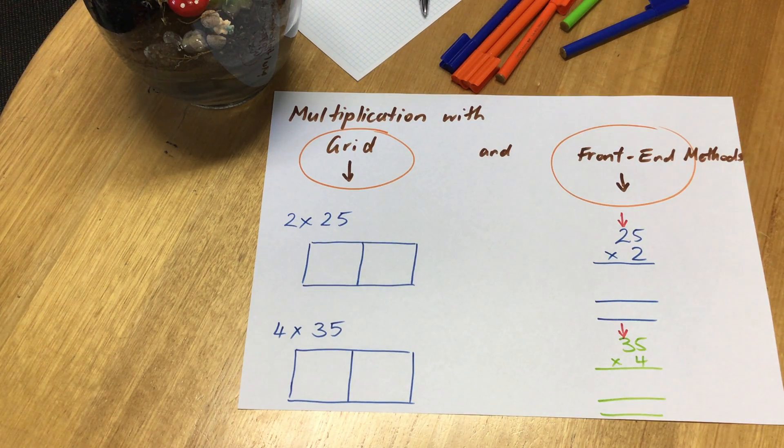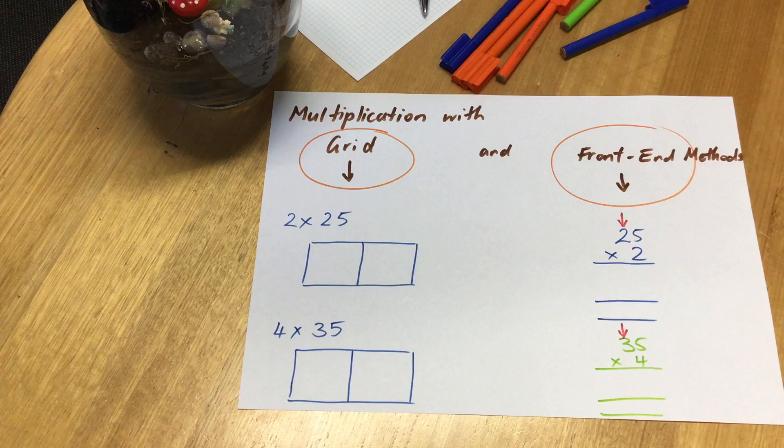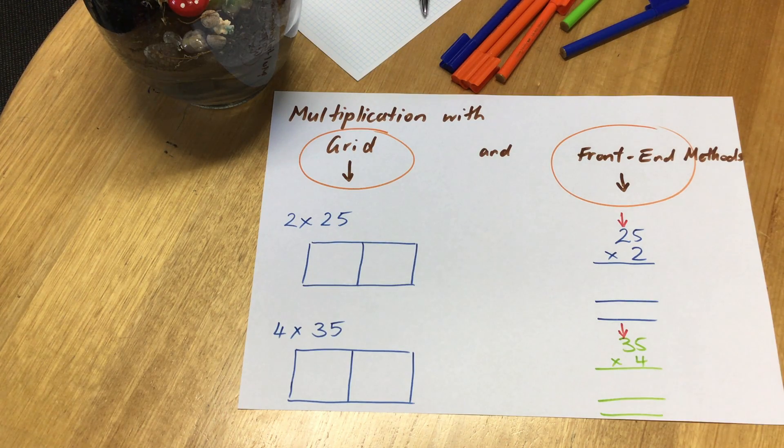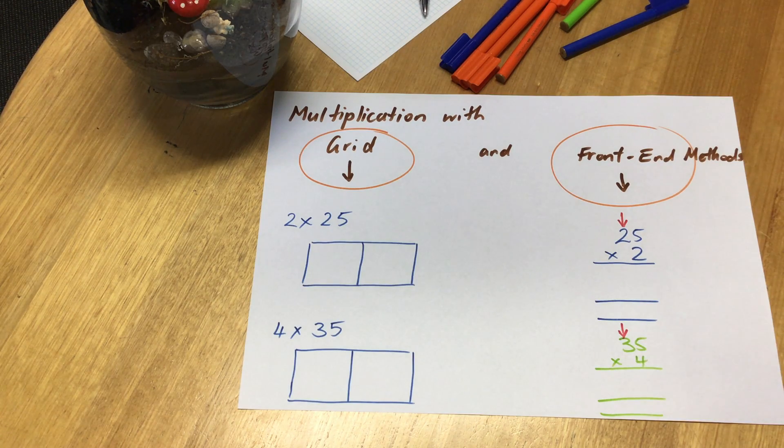Good morning everybody. Today we're going to be learning about multiplication with the grid and the front-end method, so we're looking at both methods. They're both really effective methods and comparing them, which one you choose to then frequently use is your choice because they're both effective, but it's good to learn both so that you have choices.